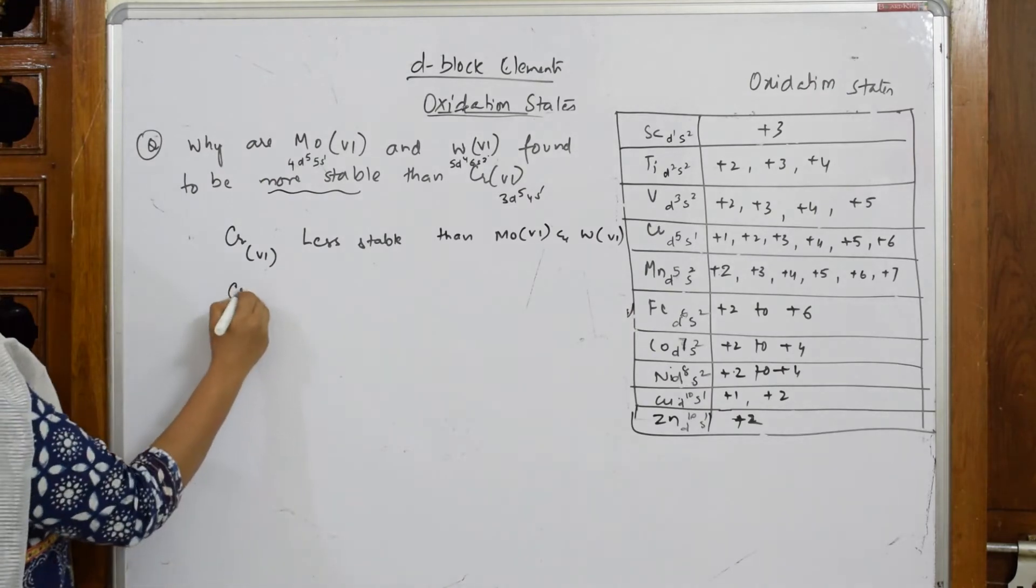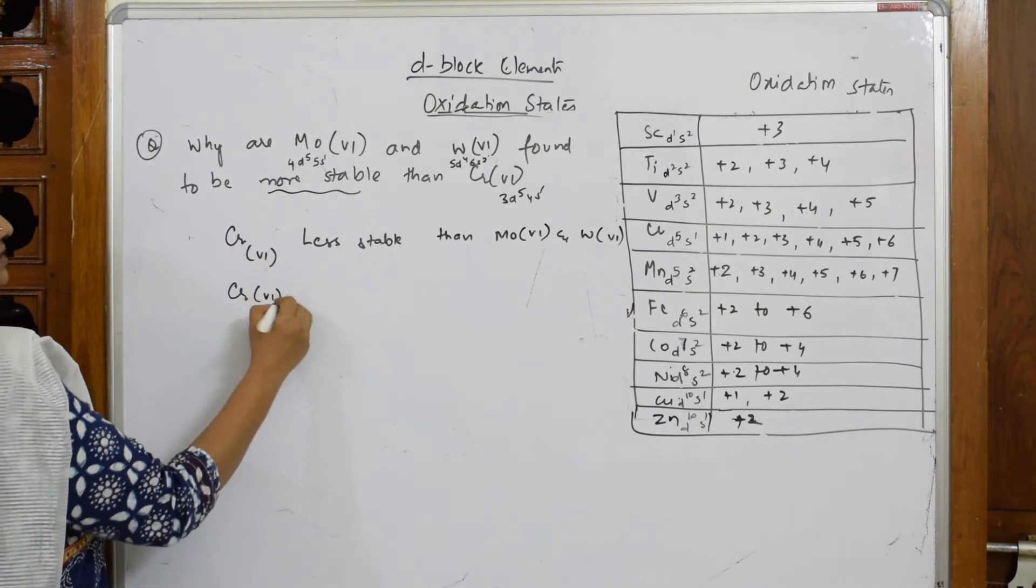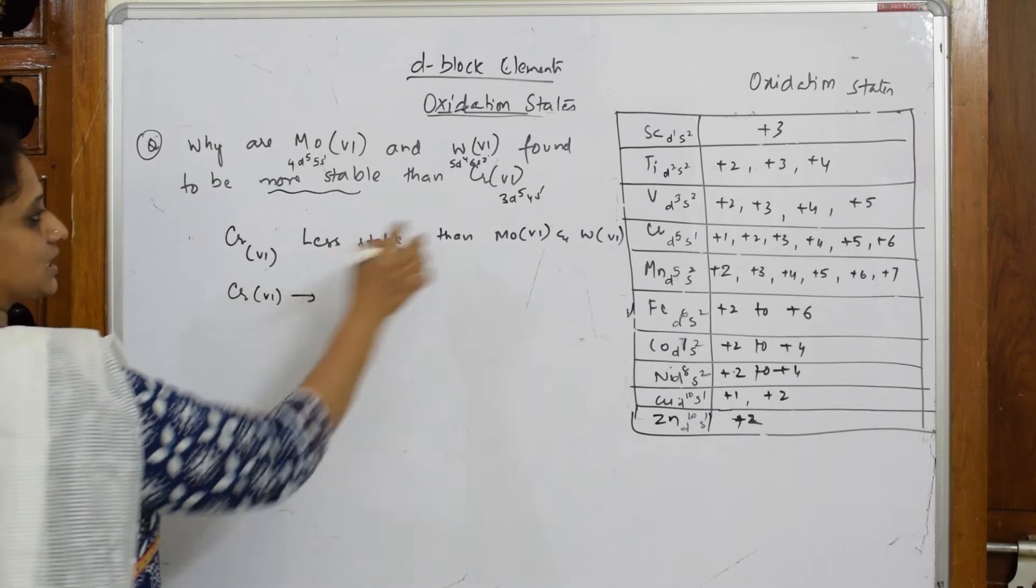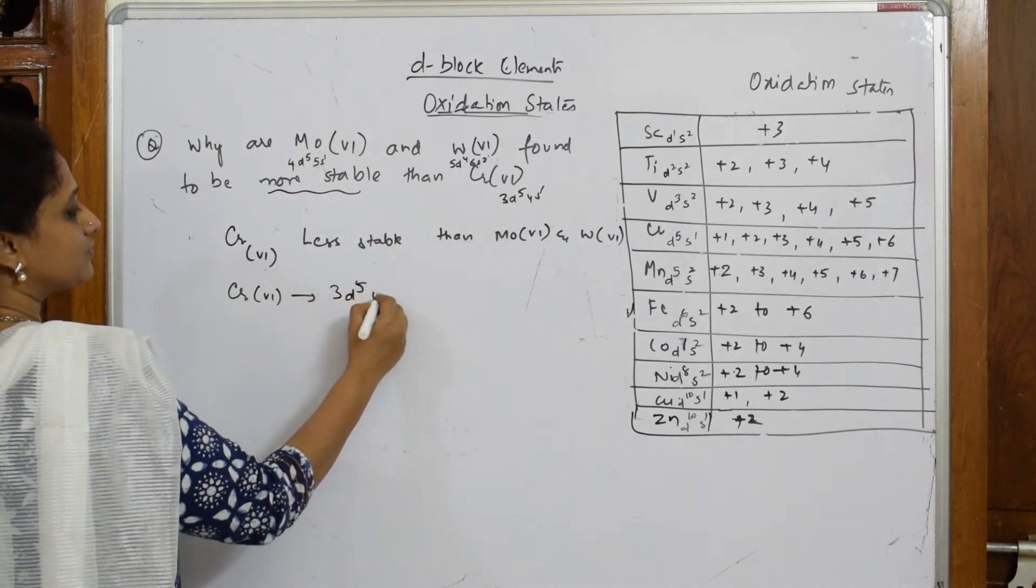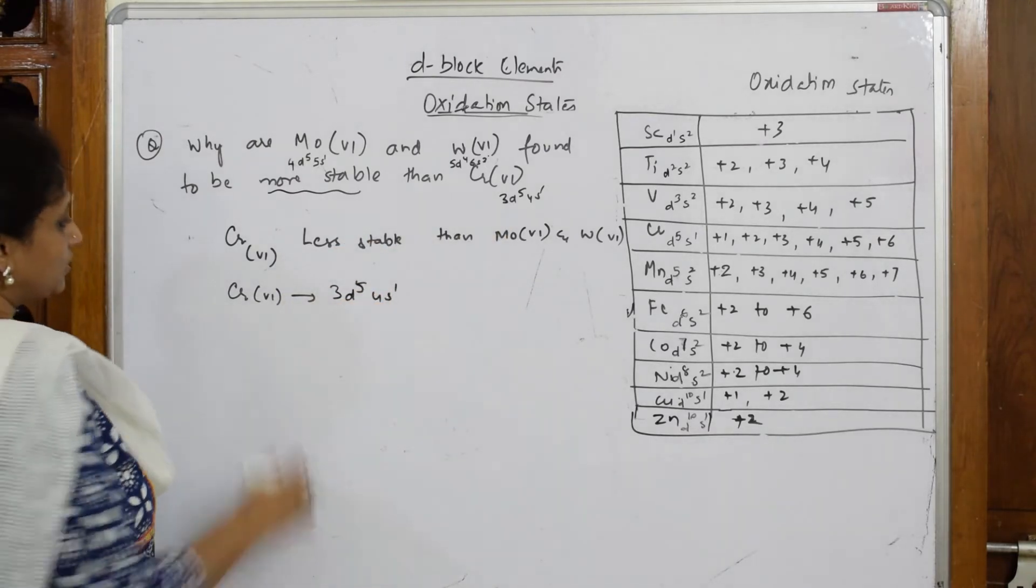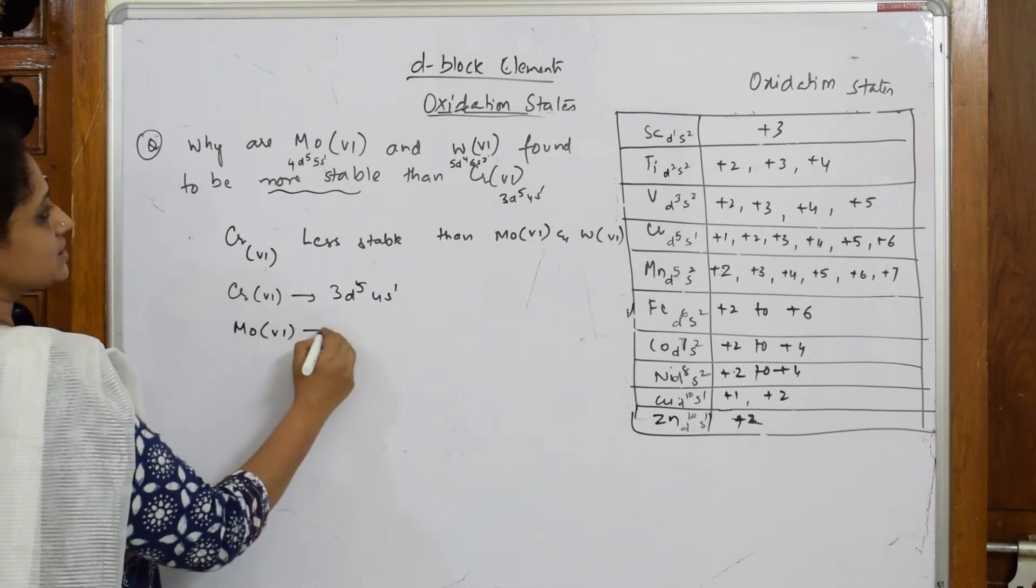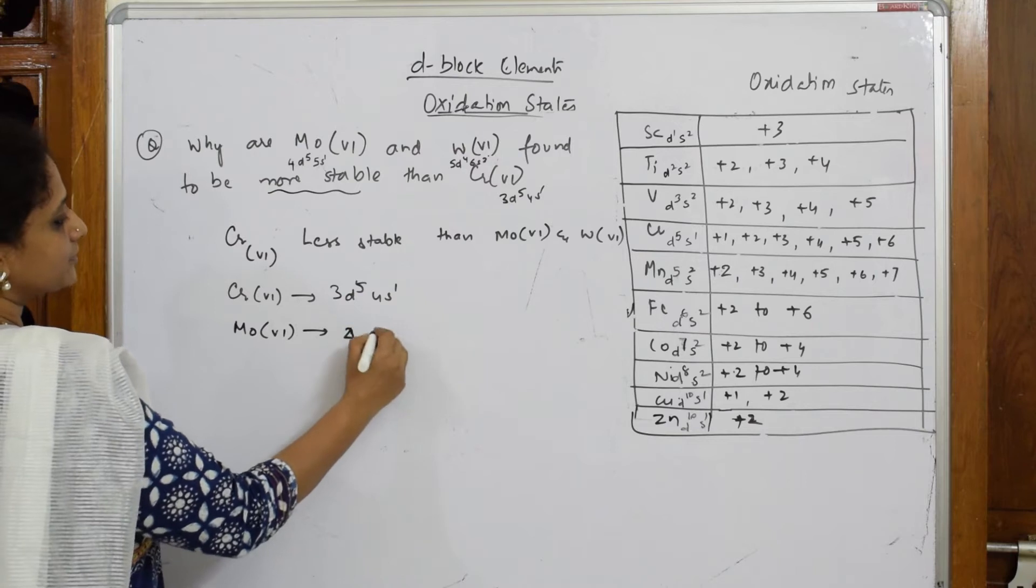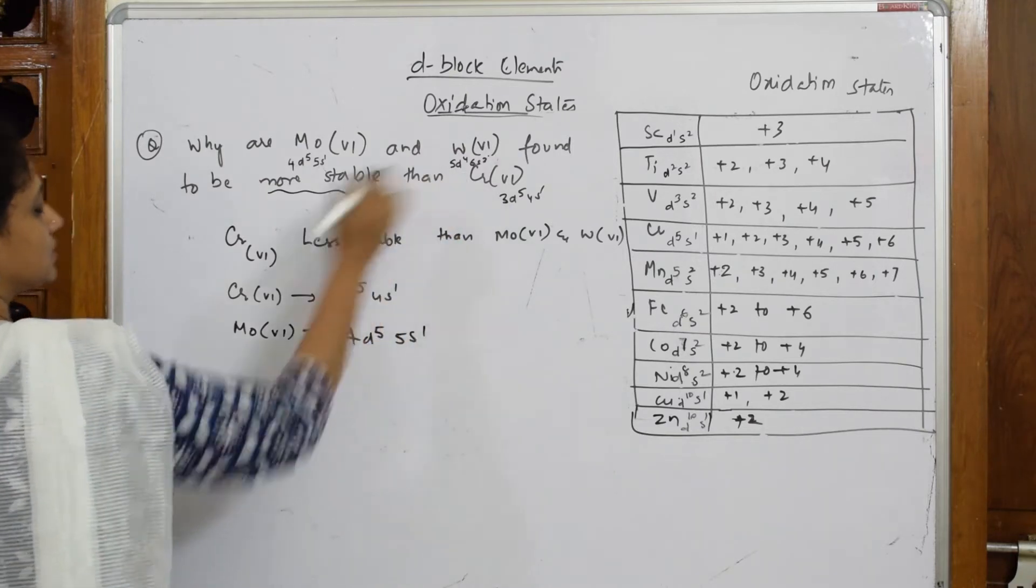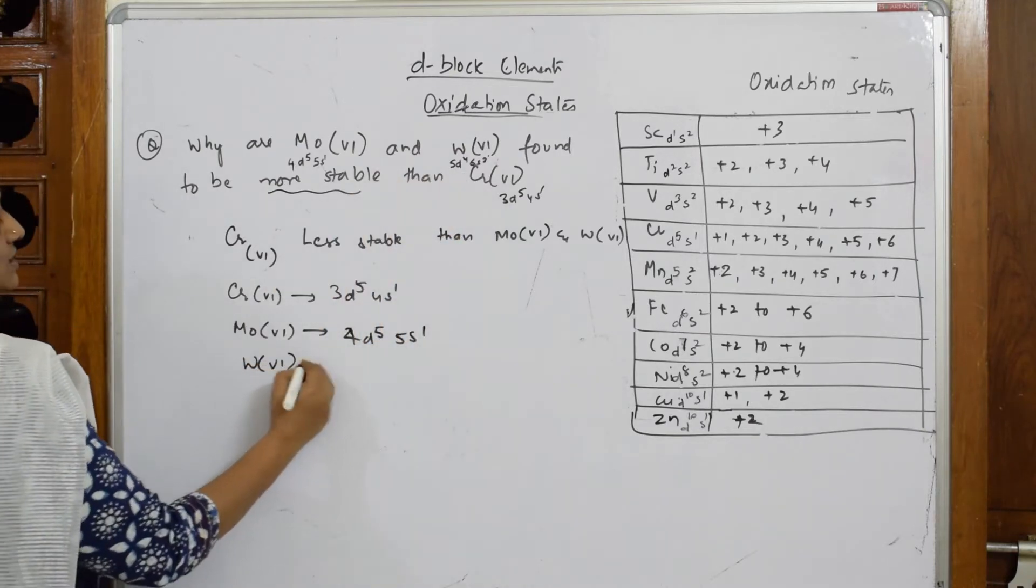the configuration first. Now chromium, when I have to take +6, its electronic configuration is 3d5 4s1, the normal one. For molybdenum +6, it is 4d5 5s1. Now for tungsten +6 oxidation state,